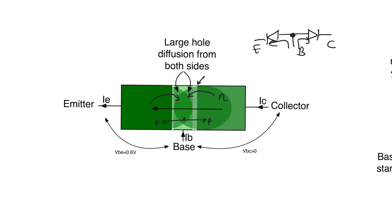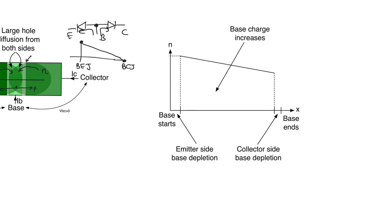In the active region, the Base-Collector junction was cut off — it was reversed. So we did have a lot of excess electrons at the Base-Emitter junction, but this dropped really precipitously until we reached basically equilibrium levels at the Base-Collector junction. In saturation, this is not going to happen because the Base-Collector junction is not reverse biased, and therefore there's nothing pushing electrons down to equilibrium levels at the Collector.